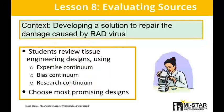At this point in the unit, students have determined the type of pathogen and how it affects the body. Now they move to the next phase: developing a solution to repair the damage caused by the virus. Students review several promising tissue engineering designs and evaluate solutions to determine if they should be considered. Students practice these skills on a wide range of articles, evaluating the author's expertise and bias, as well as how developed the research is. They are introduced to the expertise, bias, and research continuums, which serve as tools for this analysis.